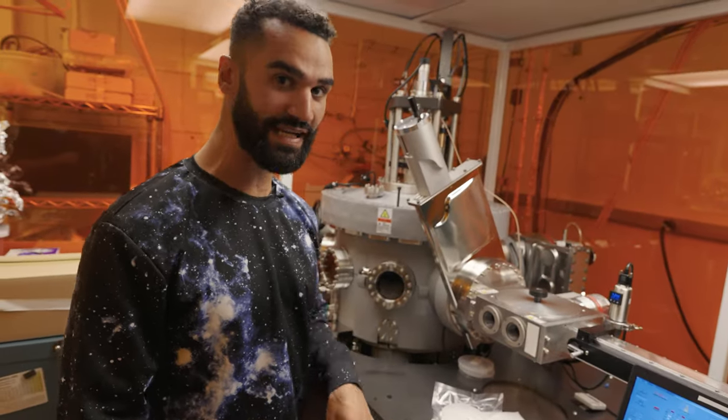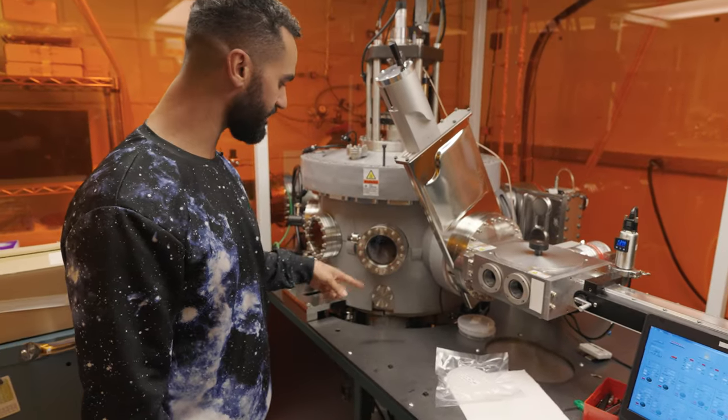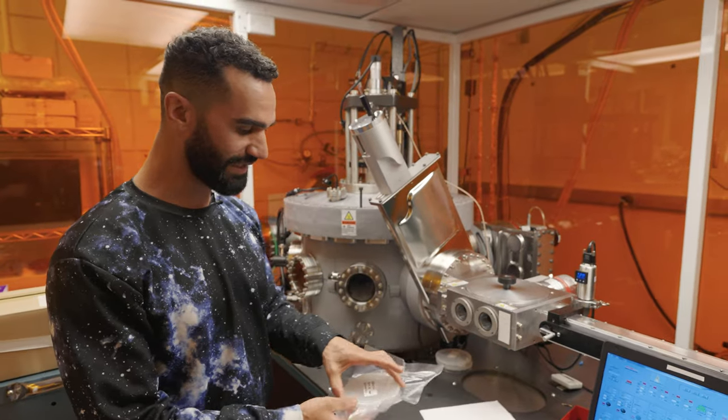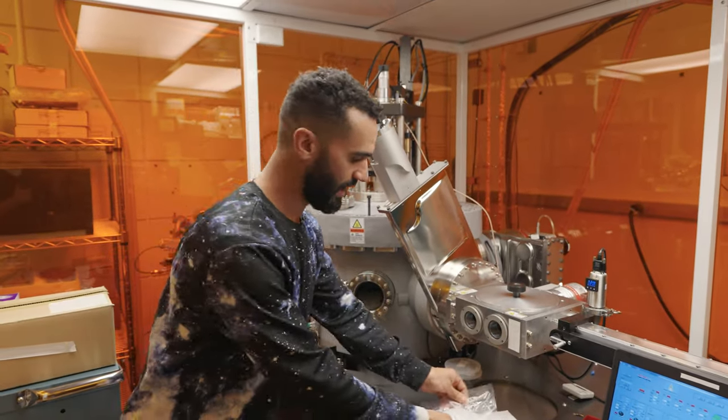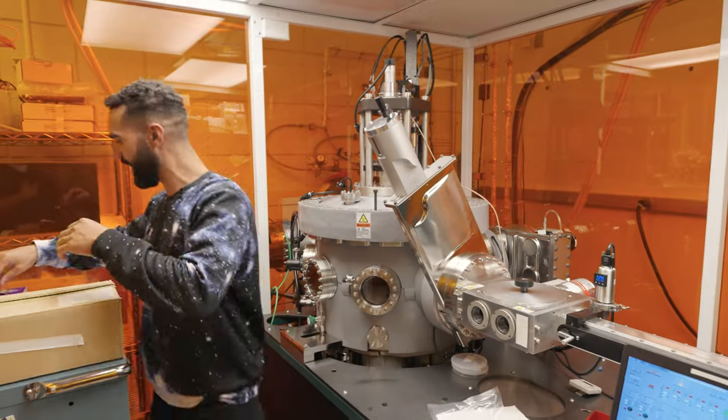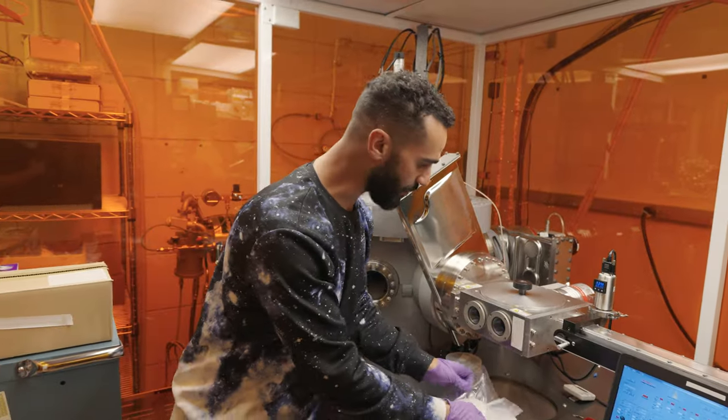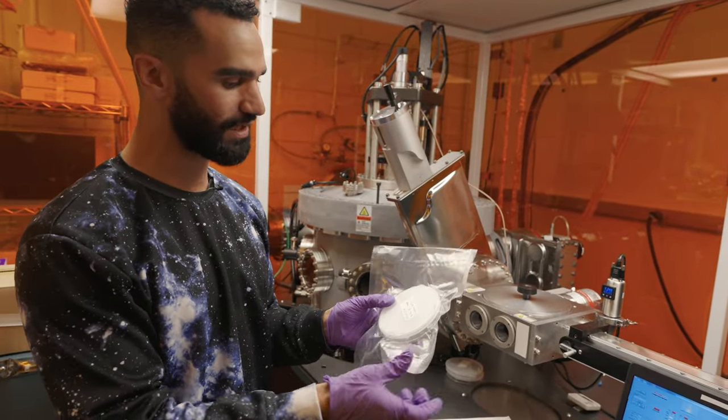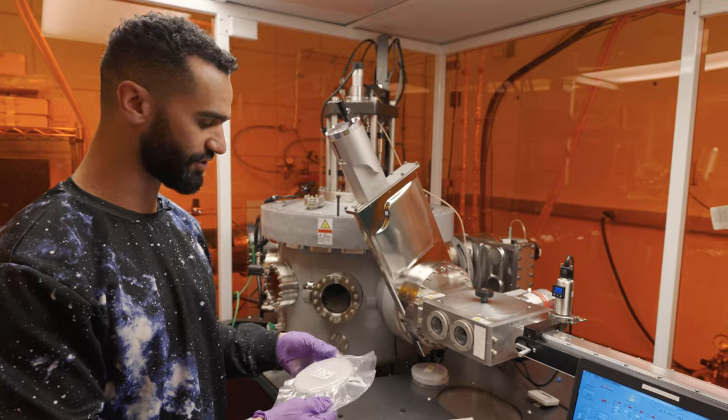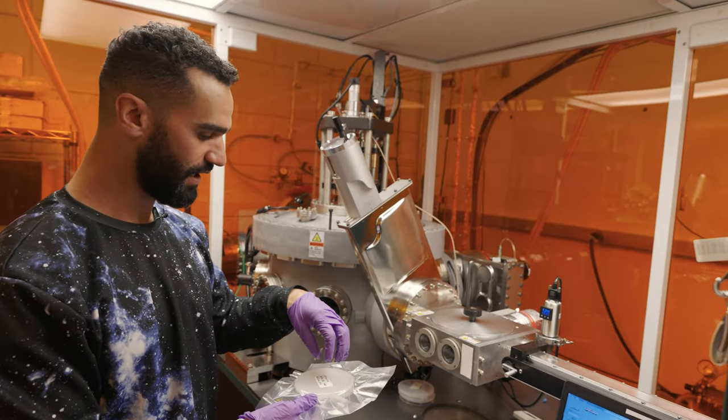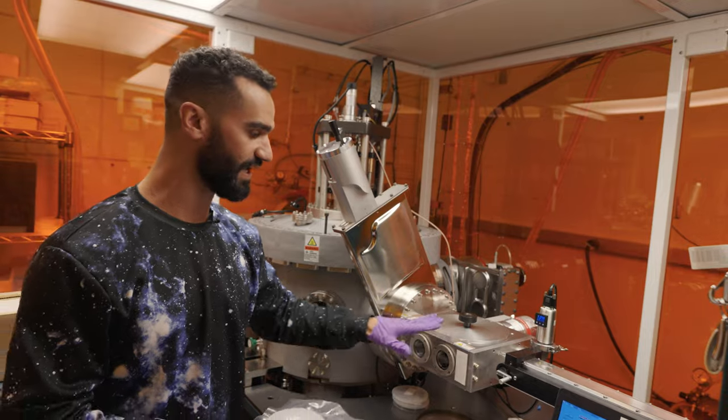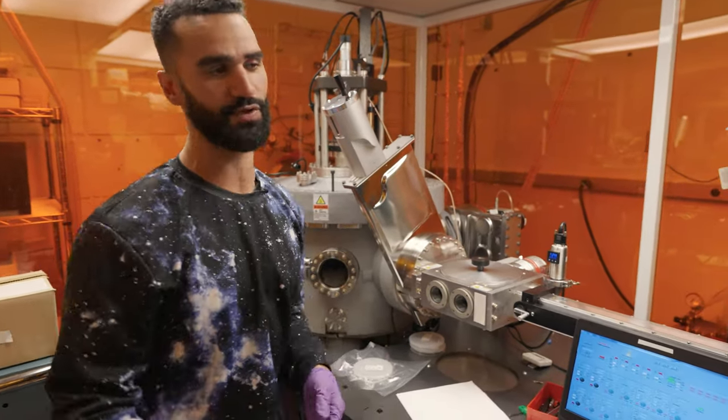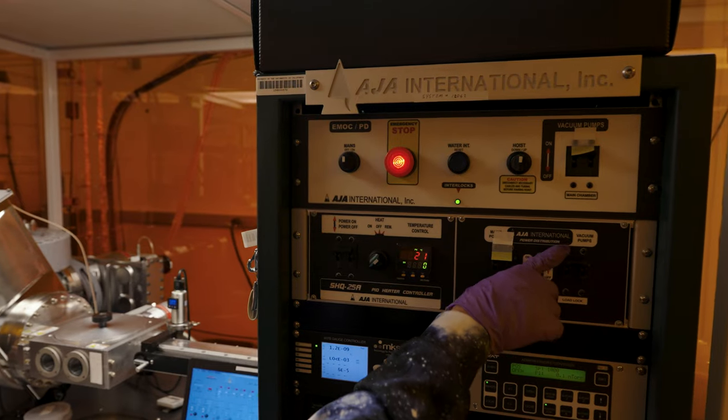Today we're going to be depositing beta tantalum. We have a tantalum target on one of these guns onto a cleaned sapphire wafer. The first thing I'm going to do is put on some gloves. This wafer was prepared in our nano fab at UCSB, so I've been able to vacuum seal it. Getting it from the nano fab into the vacuum chamber as soon as possible is really important.